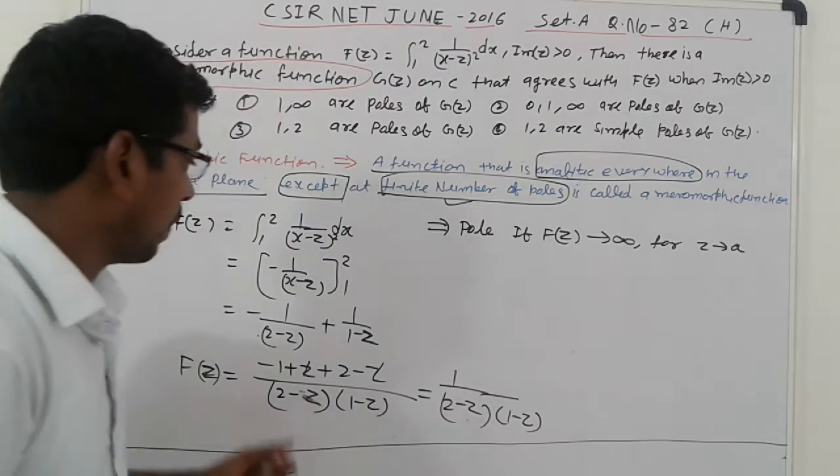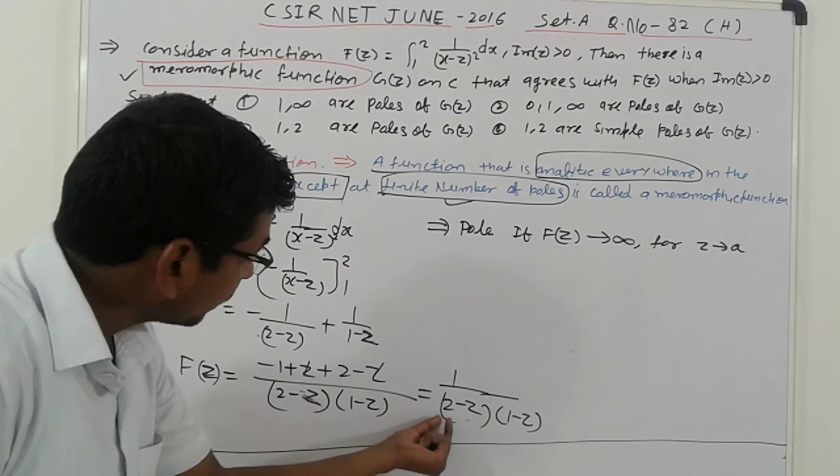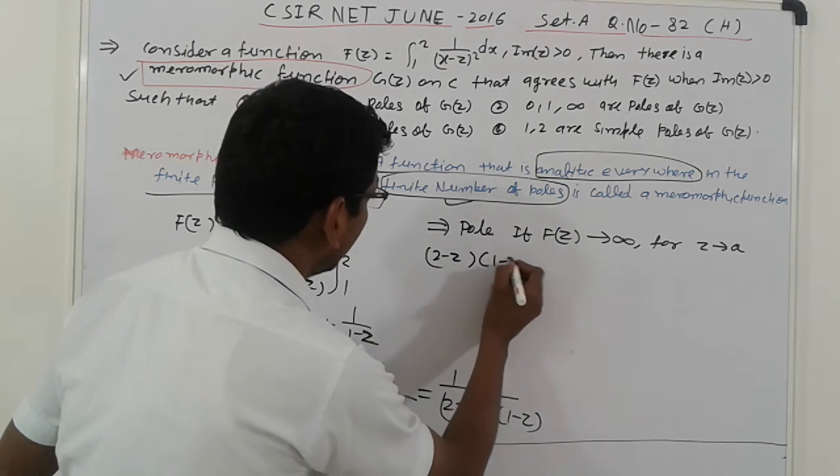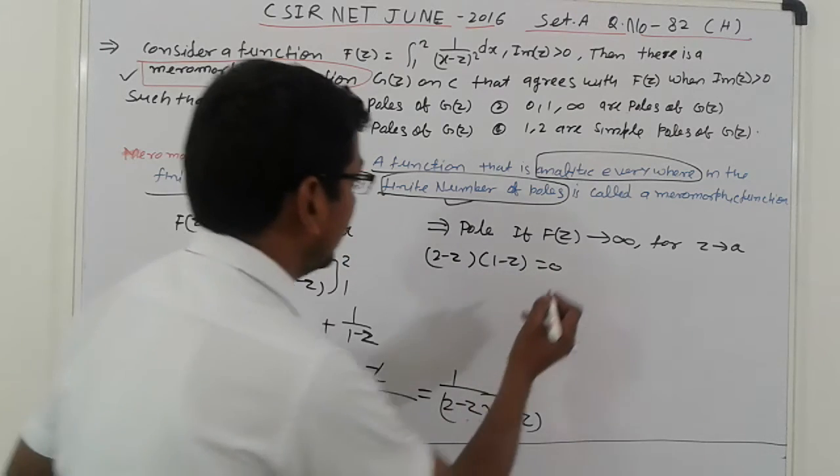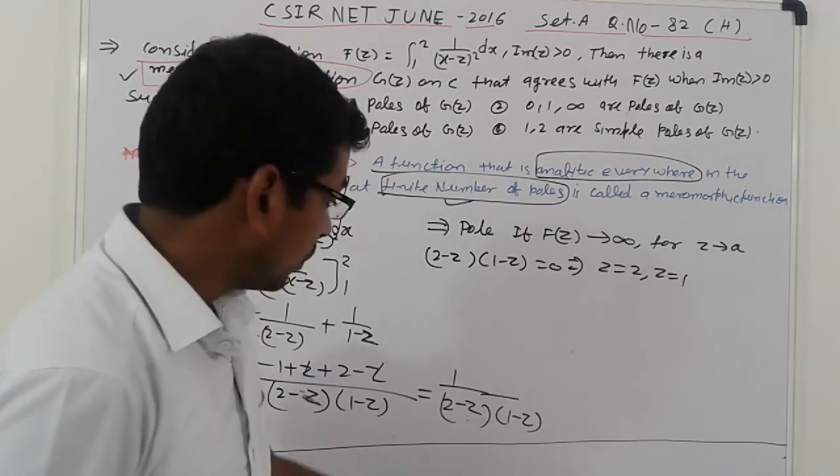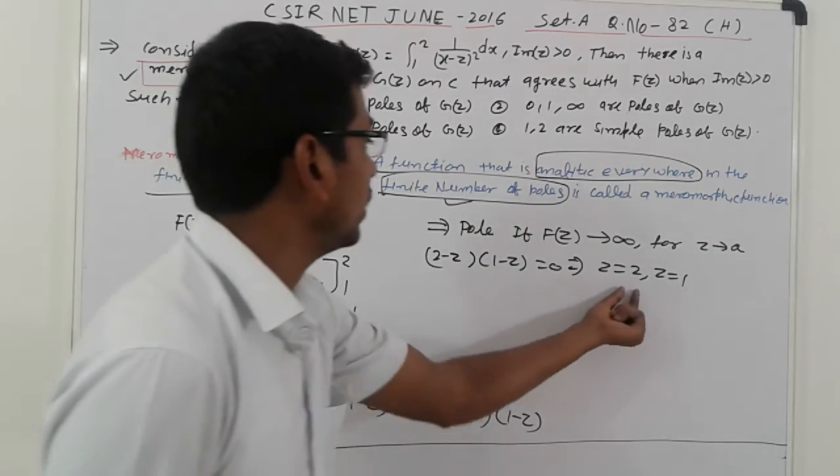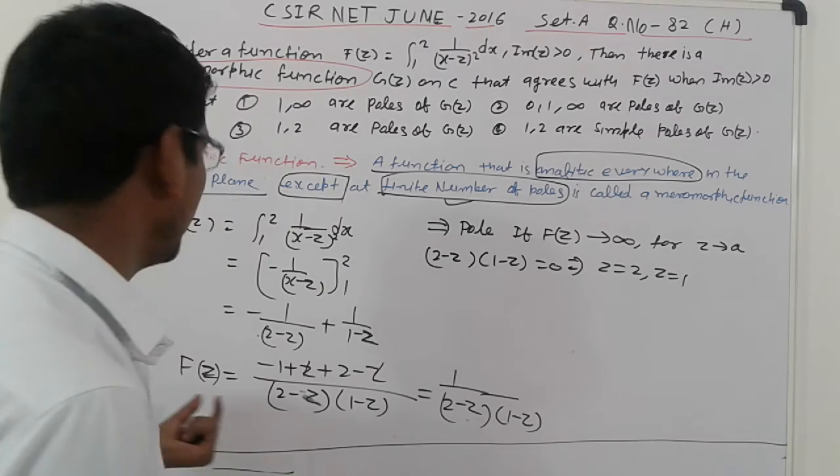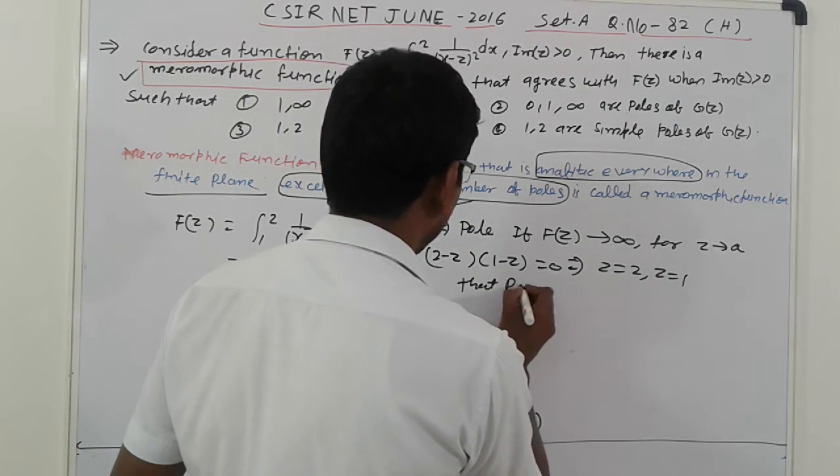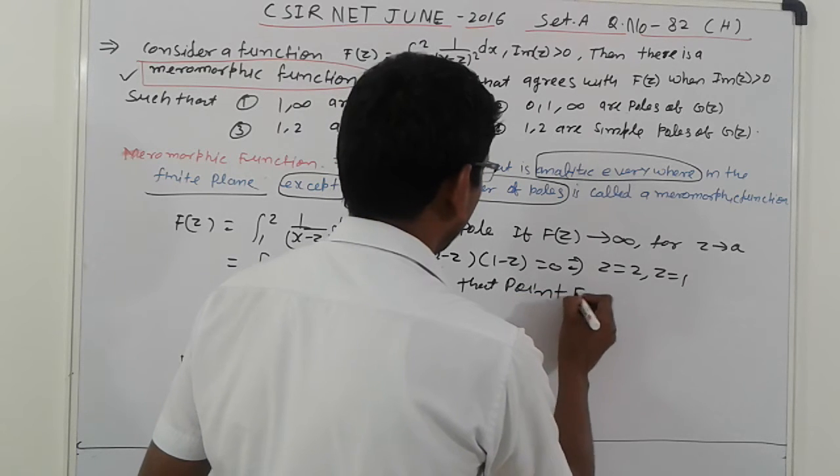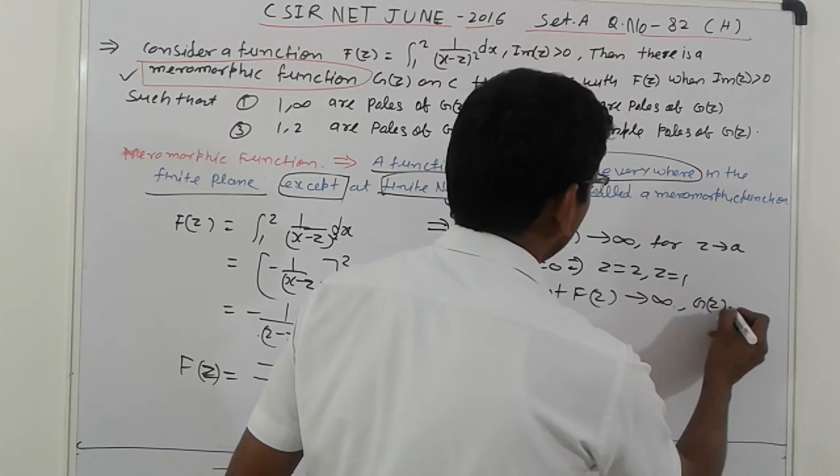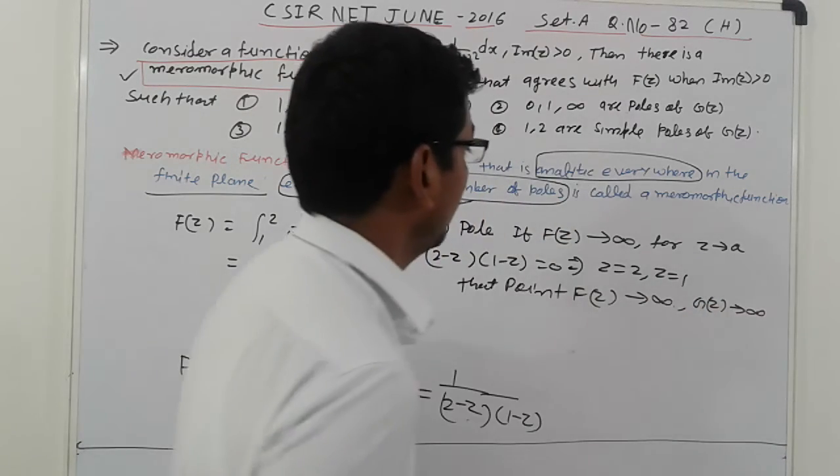So here, z taken, so two minus z and one minus z equal to zero. So, simplifying, z equal to two and z equal to one. And f of z tending to zero at those points, f of z tending to infinity, z tending to infinities.